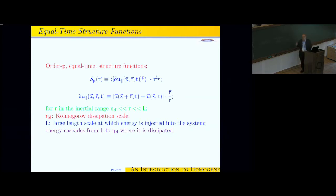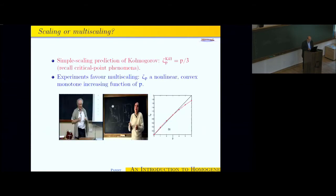If you ask what does the K41 theory imply for this power zeta sub p, it's the same theory which gave the minus five-thirds for the energy spectrum, you will find p divided by three. Is that correct? Well, experiments which are plotted here, that's a plot of zeta p versus p. If Kolmogorov had been right, you would get this straight line, which is p divided by three.